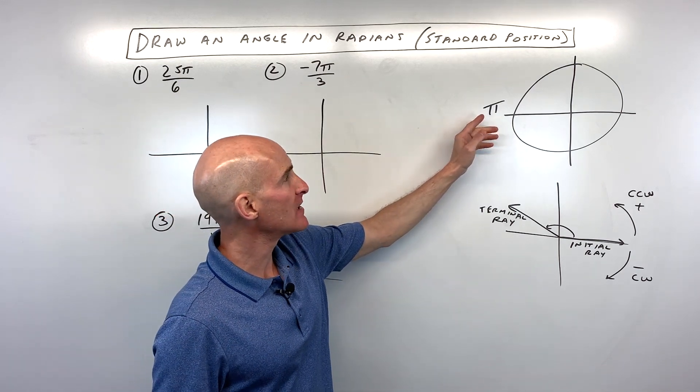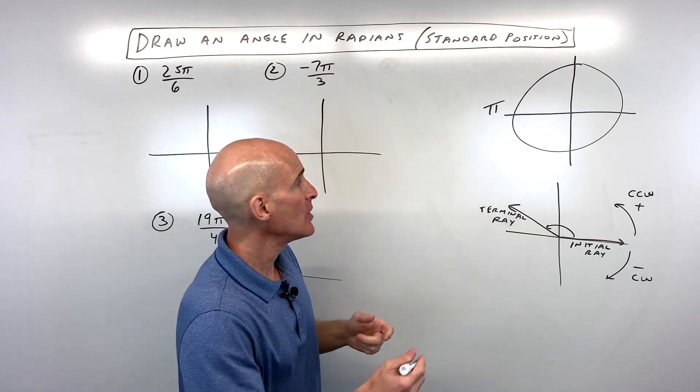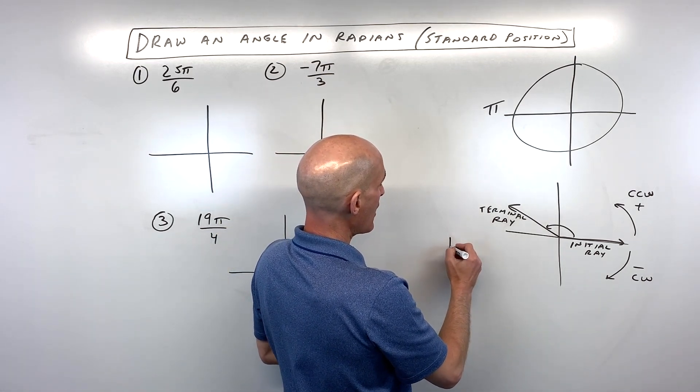The main thing to remember is that pi radians, that's the same thing as 180 degrees. So whenever you see pi, you can replace that with 180 degrees.